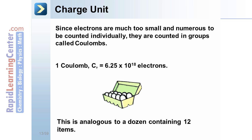This is similar to how we count other things, like eggs. A dozen eggs is 12. It's simply a group of eggs. No one goes to the grocery store to buy eggs individually.